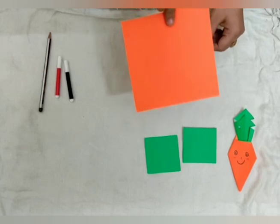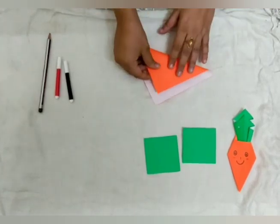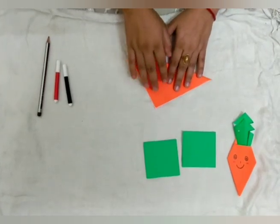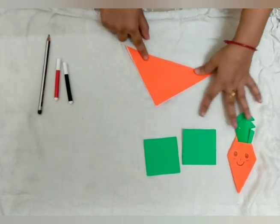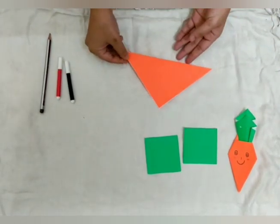First we will take orange origami sheet and we will fold this like this. We will fold origami sheet like this. See, this is triangle.